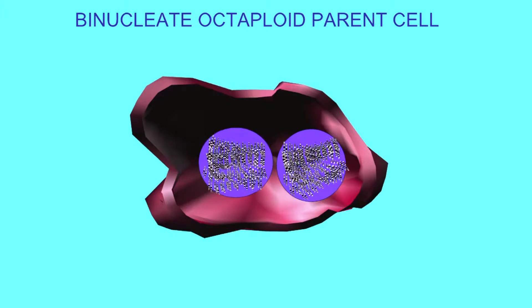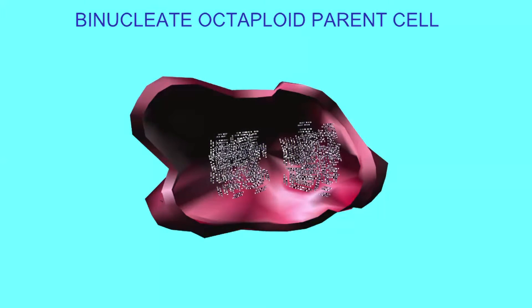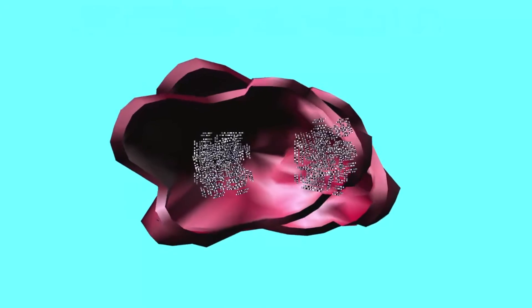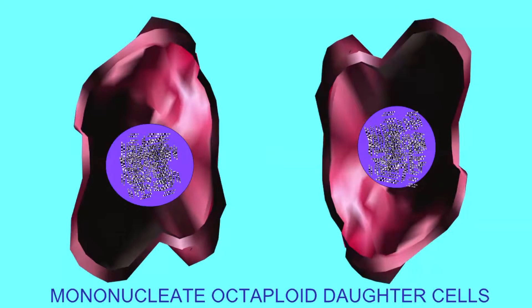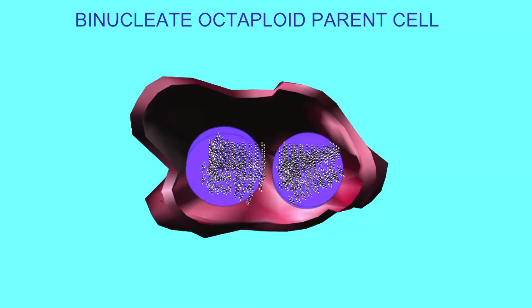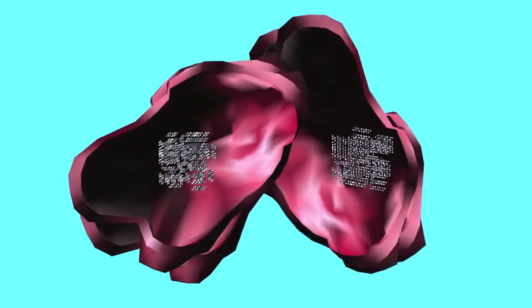If a binucleate octoploid hepatocyte prepares for cell division and replicates its DNA, it can divide to produce two octoploid mononucleate daughter cells. An octoploid mother cell may undergo double mitosis and, after two rounds of cell division, produce four tetraploid mononucleate daughter cells.